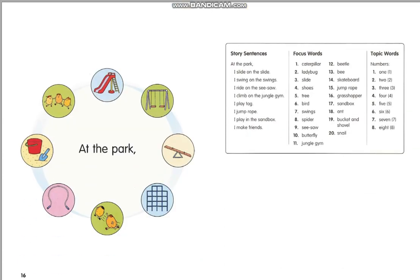Now, let's review some story sentences. At the park, I slide on the slide. At the park, I swing on the swings. I ride on the seesaw. I climb on the jungle gym. I play tag. I jump rope. I play in the sandbox. I make friends.